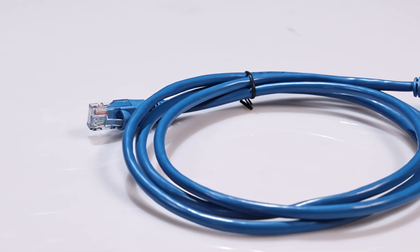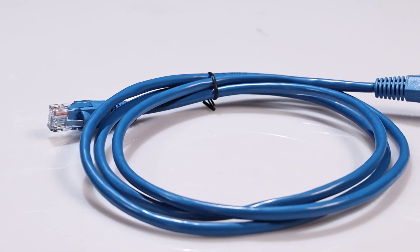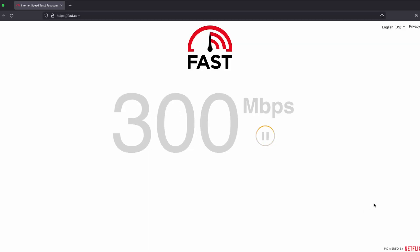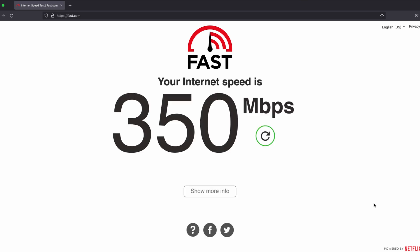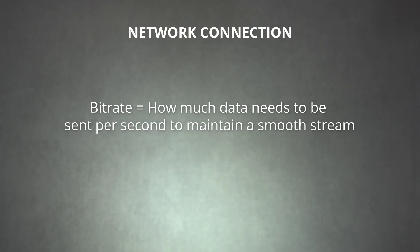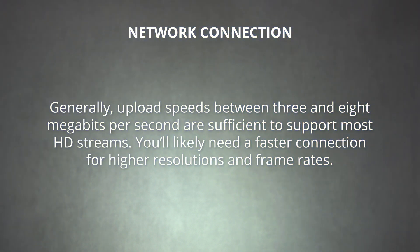Before you can start streaming, you'll need to have a reliable internet connection. A steady connection means a constant stream for your viewers. It's always best to use a hardwired internet connection for live streaming. Upload speeds will be more important than download speeds. It's difficult to pin down a specific minimum internet speed needed to live stream — it will largely depend on your stream's bit rate, which tells us how much data needs to be sent per second to maintain a smooth stream. Generally, upload speeds between 3 and 8 megabits per second are sufficient to support most HD streams, though you'll likely need a faster connection for higher resolutions and frame rates.